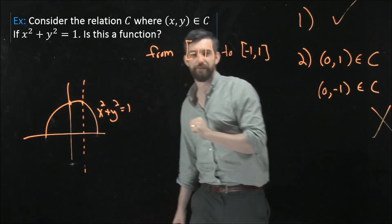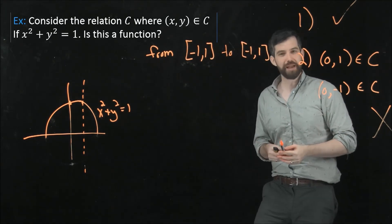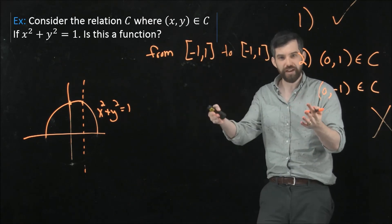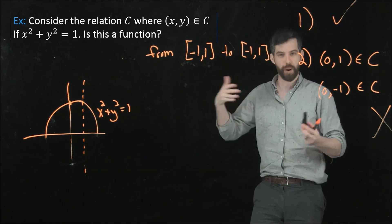Now this does satisfy the vertical line test and would be a function. So sometimes you can massage things. What you're given is not a function, but if you make some restrictions, in this case I restrict to y being positive, then I recover that it is indeed a function.